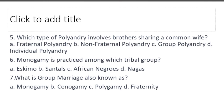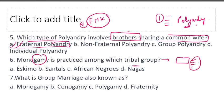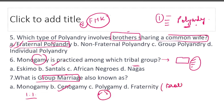Which type of polygyny involves brothers sharing a common wife? That is fraternal polyandry — brothers sharing a common wife means many husbands and one wife — that is a form of polyandry, specifically fraternal polyandry. Monogamy is practiced among which tribal groups? The answer is Santals. What is group marriage also known as? The answer is Cenogamy. Monogamy is one wife and one husband; polygamy is many wives or many husbands.